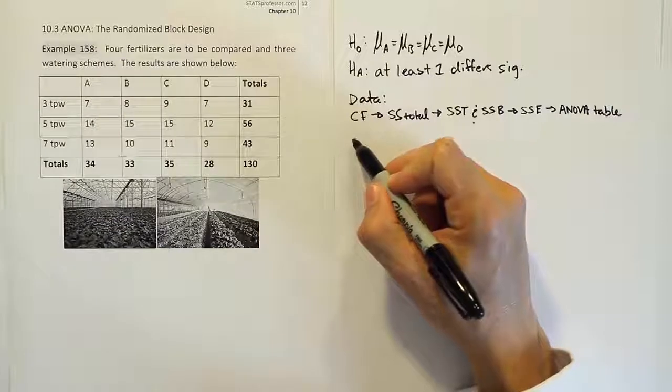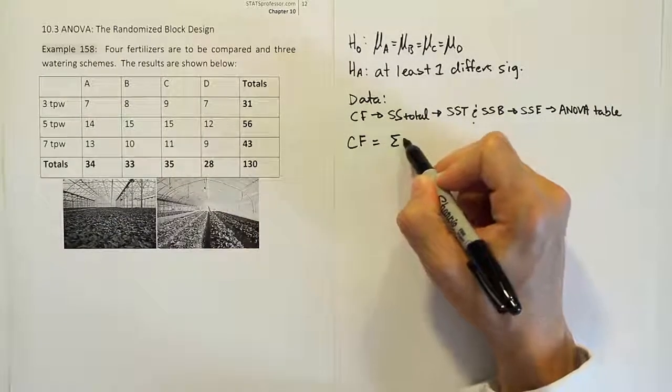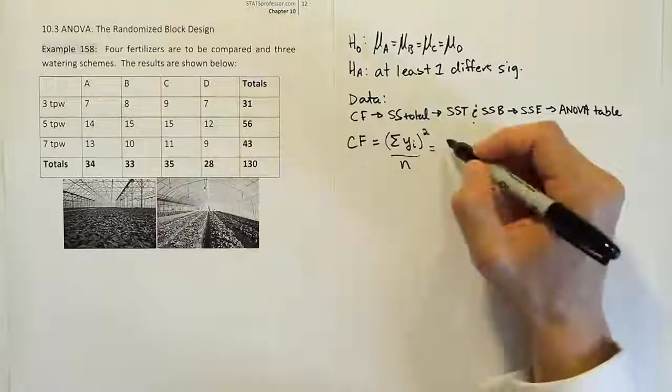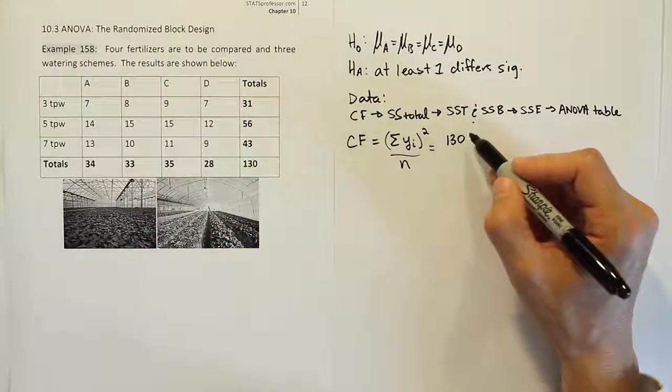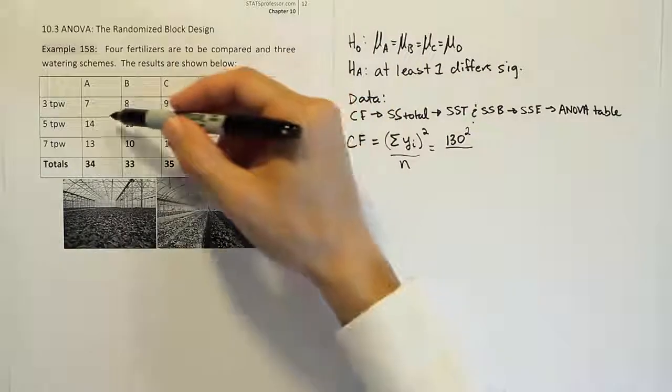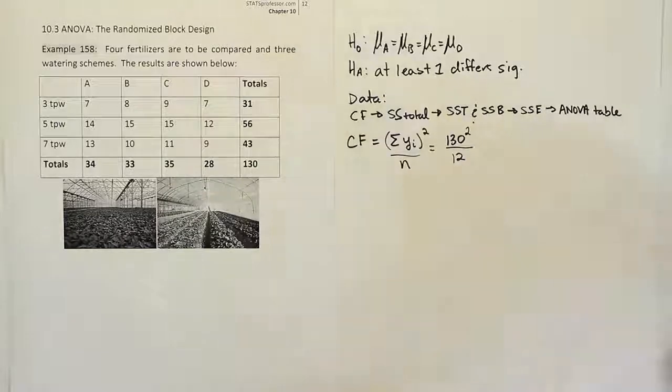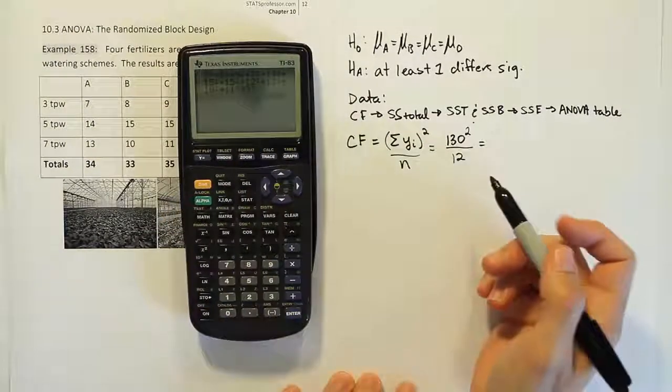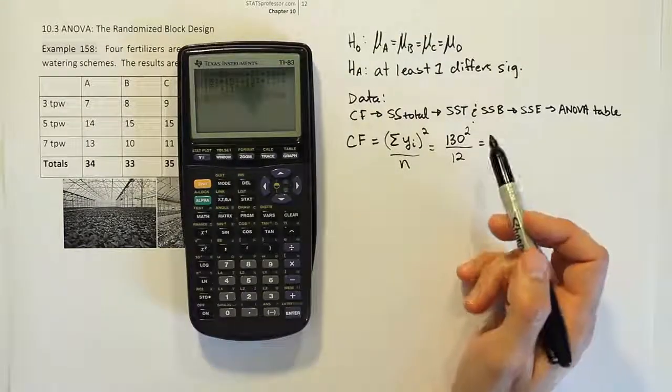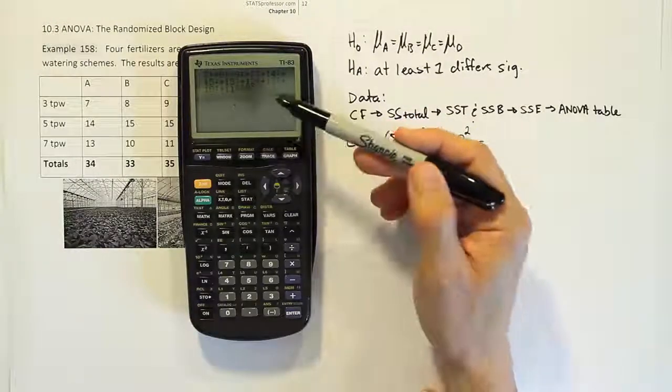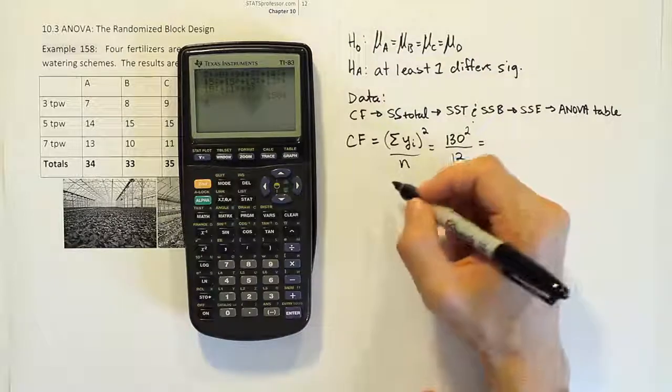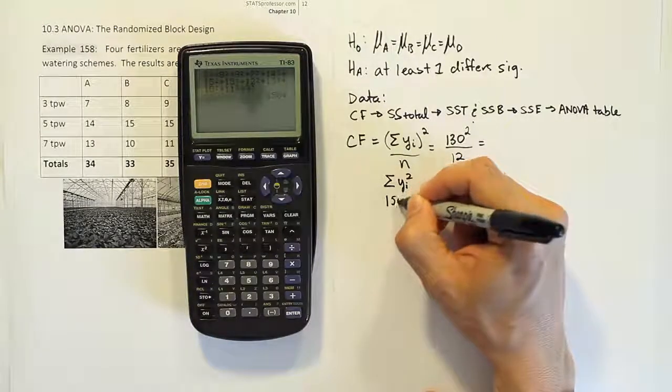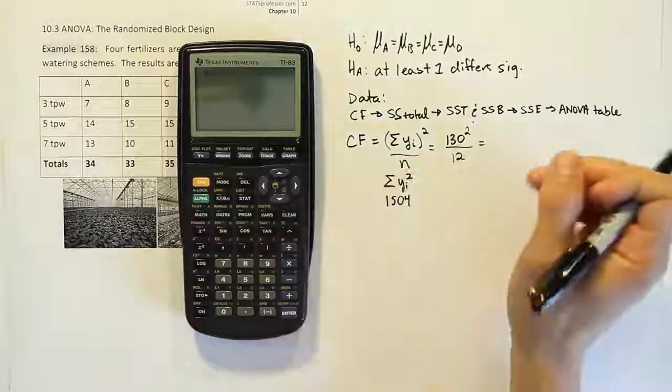Let's start with the correction factor. If you remember the correction factor, it's basically just the grand total or the summation of all the response variables squared over the sample size. Now the total here is given luckily in the table, so we don't have to do that ourselves. That's 130. That's the grand total of all the 12 numbers in the cells. Then we'll square that and divide by 12 because there are three rows of four values, so that's going to give you 12 total. Alright, we're going to work that out in a minute. Before I do that, I want to show you in my calculator that I've also done the same time a number we'll need for the next part of the problem. For SS total, we're going to have to square all the values in the table and add them up. So I've done that. We're going to get 1504. So I'm just going to write that down here beneath this. I'm going to say the summation of the yi squareds is going to be 1504. I'm just going to put that there for us later, so I don't have to worry about losing it.